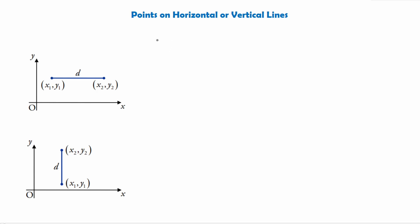We're going to begin by talking about points on horizontal or vertical lines. In this first diagram we have a line that forms from a point called x1 and y1, and a second point called x2 and y2. We've labeled this line d, because d stands for the distance — it is the distance from this point to this point along the line. When talking about distance we might also refer to it as length, because the distance of the line is simply just the length of the line.